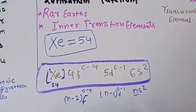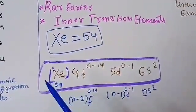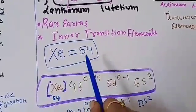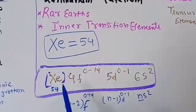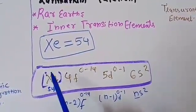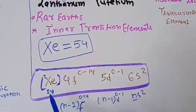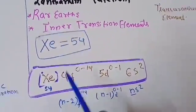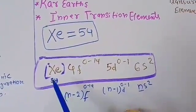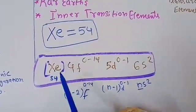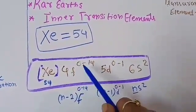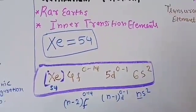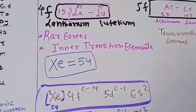The general electronic configuration — since the atomic number of xenon noble gas is 54, we can write it in shorthand. We will always take xenon in the beginning, as it is very tedious to write the 54-electron configuration again and again. So we write: [Xe] 4f⁰⁻¹⁴ 5d⁰⁻¹ 6s². We will see the electronic configuration in detail also.